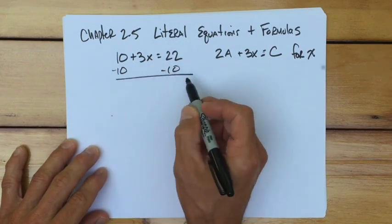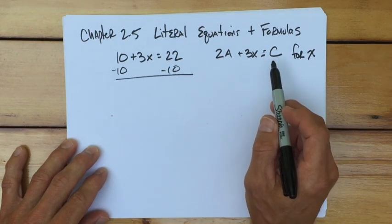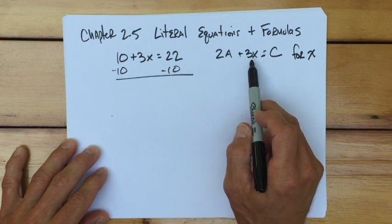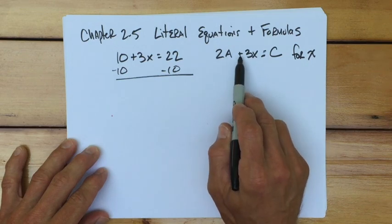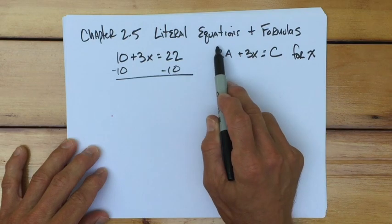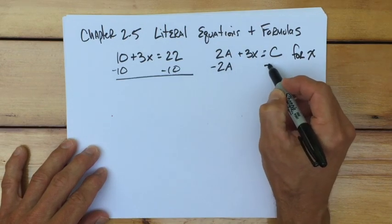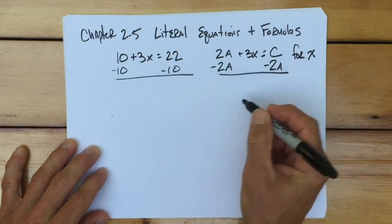Now, I have the two side by side for a reason. The one on the left, I think all of us recognize what to do first, but the one on the right, there's a lot going on. But it's still the same general format. We have something being added to 3 times x, and we want to get x by itself. So the something that was added needs to go away.